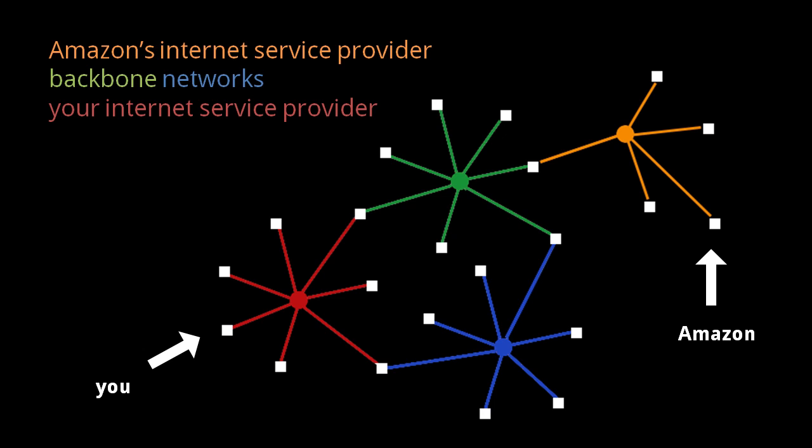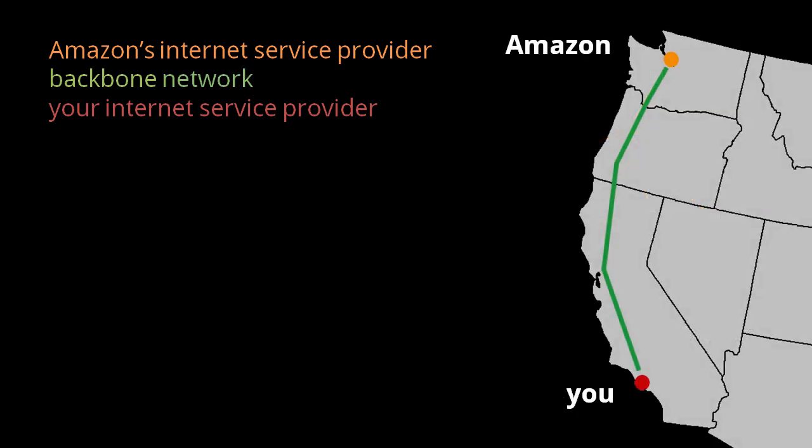For example, when you visit Amazon.com, your computer is contacting a web server operated by Amazon. Amazon's server is connected to a service provider, and your own system is connected to your own service provider. These two service provider networks probably aren't connected directly, and so instead exchange packets through one or more intermediary backbone networks. My service provider network may be confined to just the local Southern California region, and likewise Amazon's service provider may be confined to just the local Washington region, so the backbone networks in between, operated by telecommunication companies, probably carry the packets over the longer haul between Southern California and Washington.